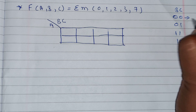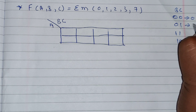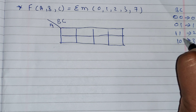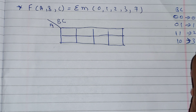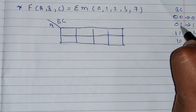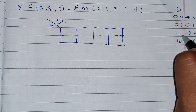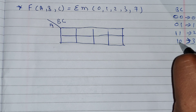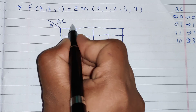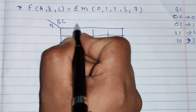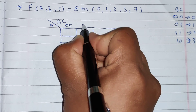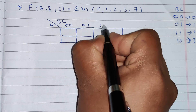The column numbers are 0, 1, 2, and 3. In Gray code: 0 is written as 00, 1 as 01, 2 as 11, and 3 as 10. We write the values of BC in Gray code along the columns: 00, 01, 11, and 10. The row variable A takes only two values: 0 and 1.